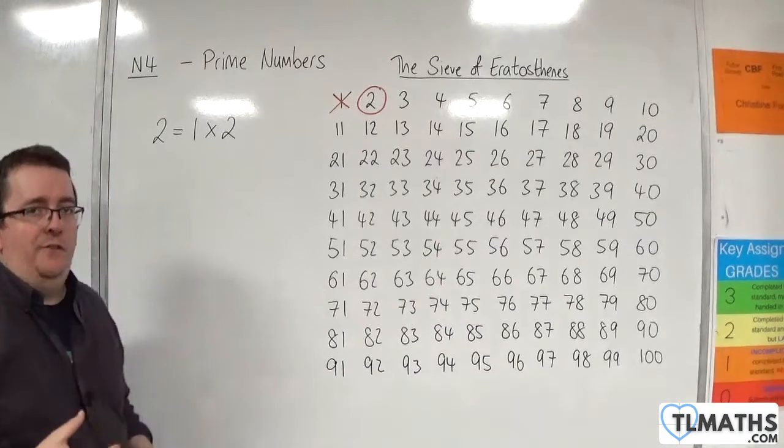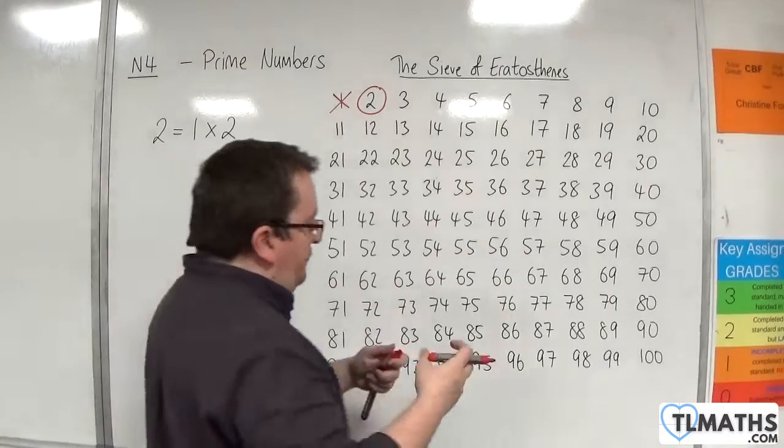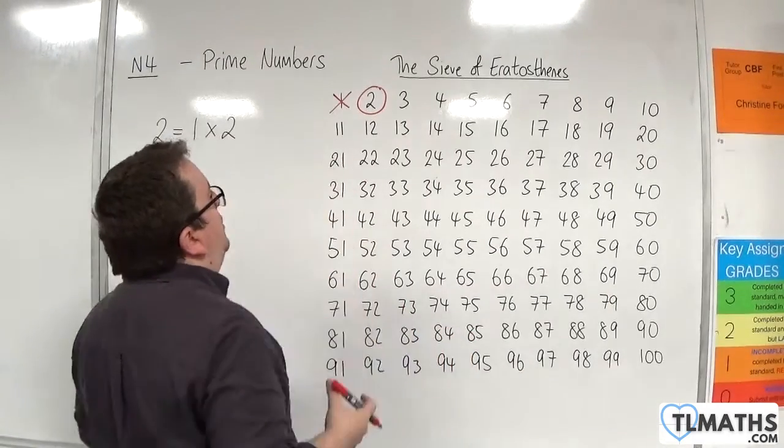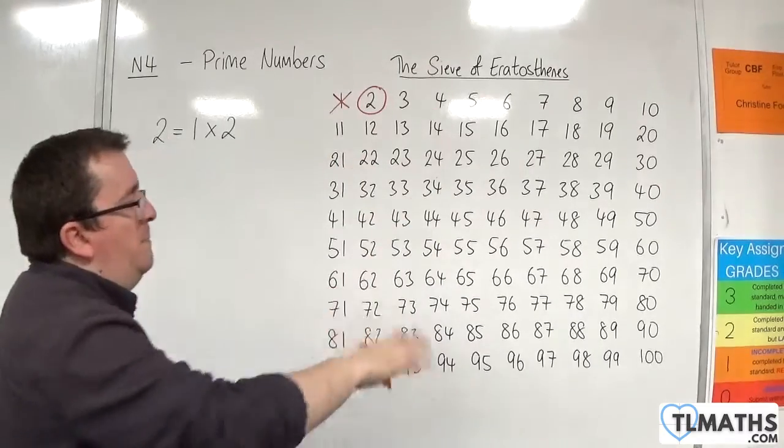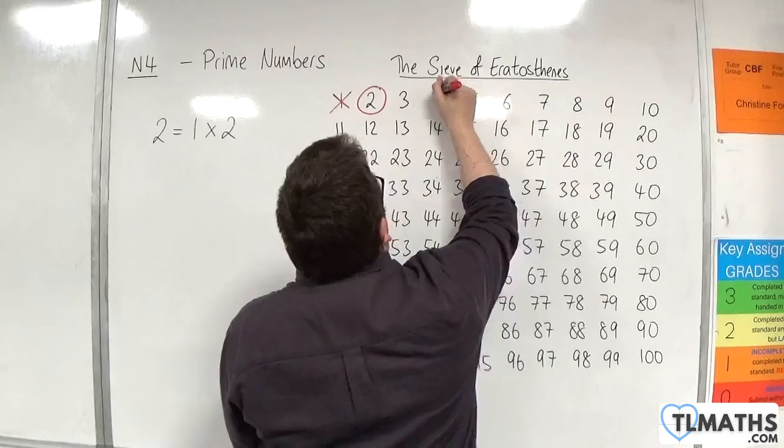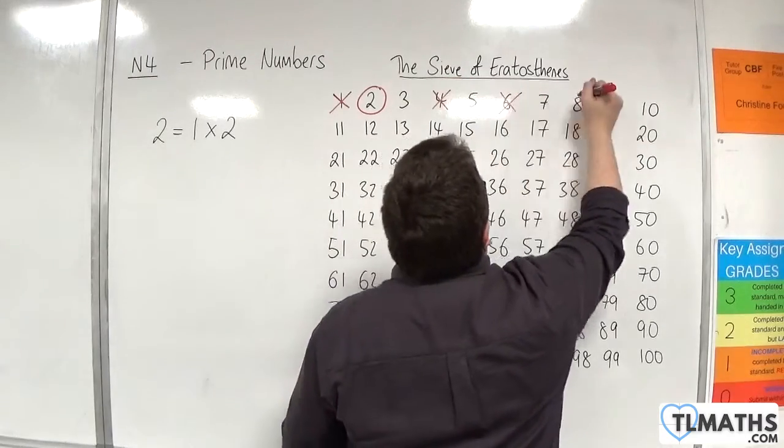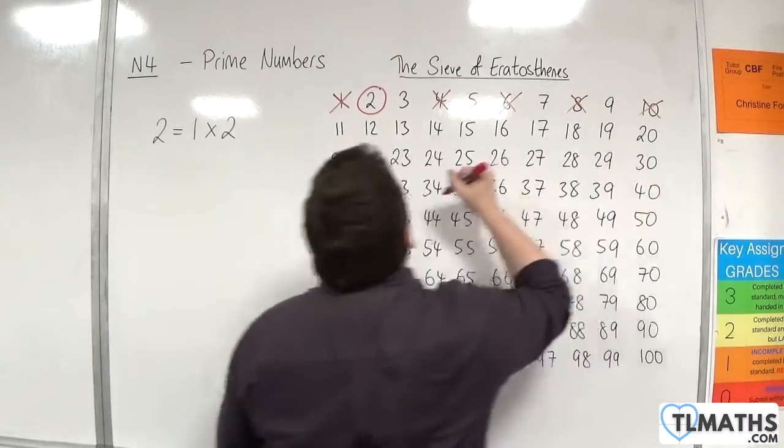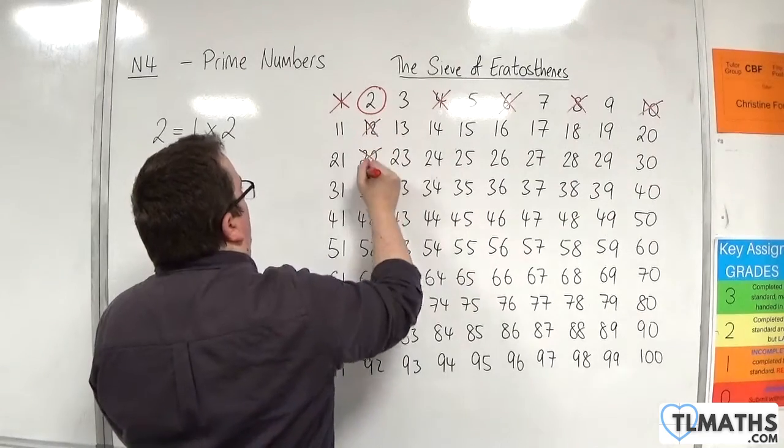But the true definition is that it has precisely two factors, two distinct factors if you like. So because we know that two is prime that means we can get rid of all of the multiples of two they cannot be prime. So bye bye four six eight ten all these can go.